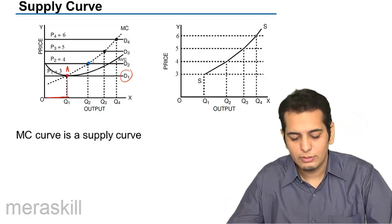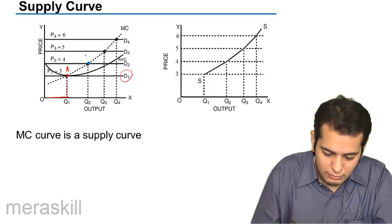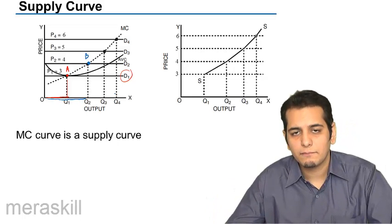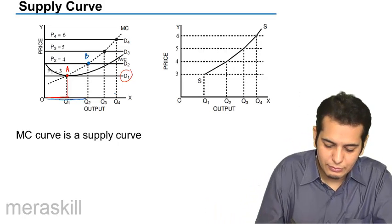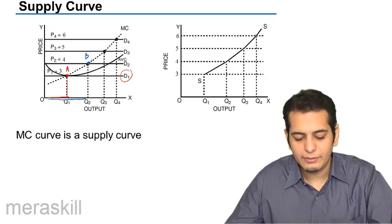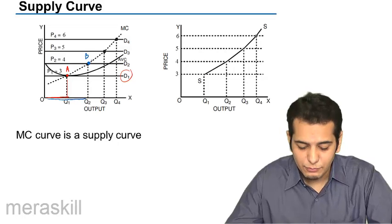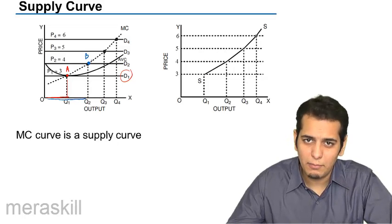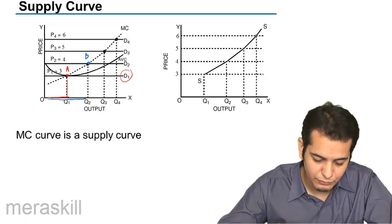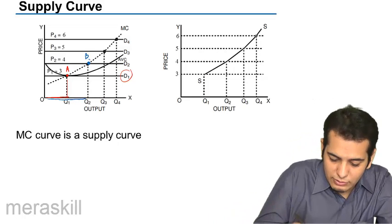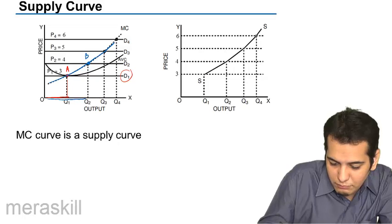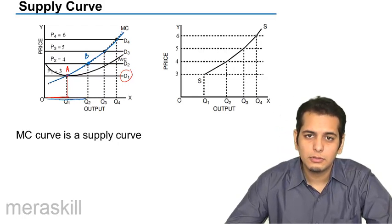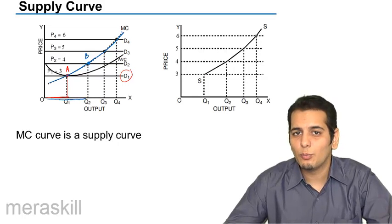The quantity it should sell is OQ2, because the marginal cost curve cuts the demand curve at point B. At this point, price equals demand equals average revenue equals marginal revenue, and here marginal revenue equals marginal cost. This is the marginal cost curve for the firm.